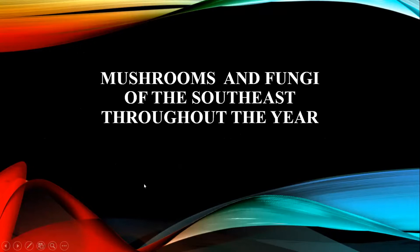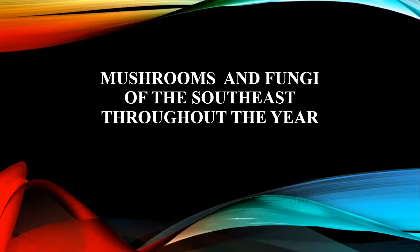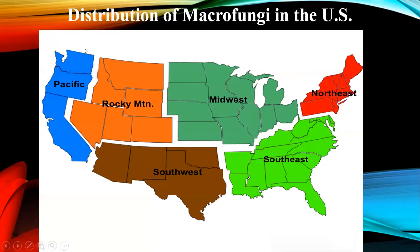Sam has suggested that rather than just talking about the mushrooms of Georgia, people might be interested in hearing about mushrooms of the southeast. That's what I'm going to talk about. We're going to look at three different seasons - spring, summer, and fall - and look at some examples. This map divides the United States and is useful for looking at different regions where mushrooms are known to occur.